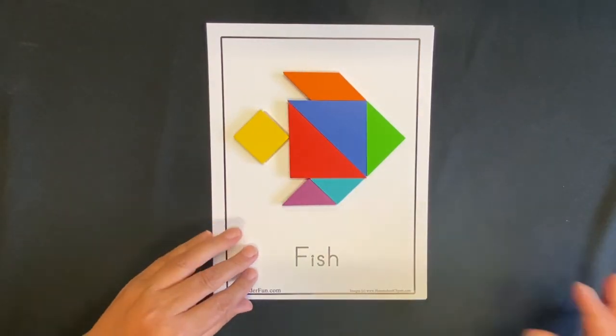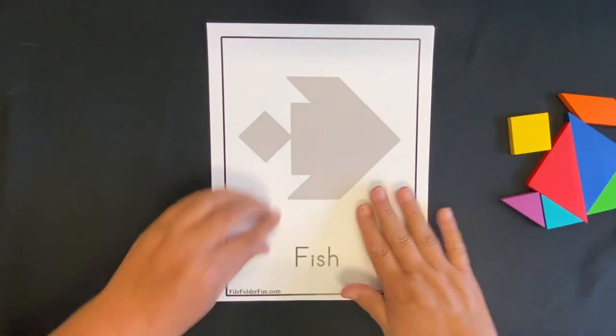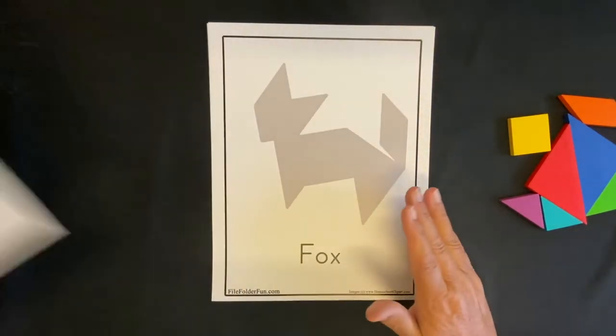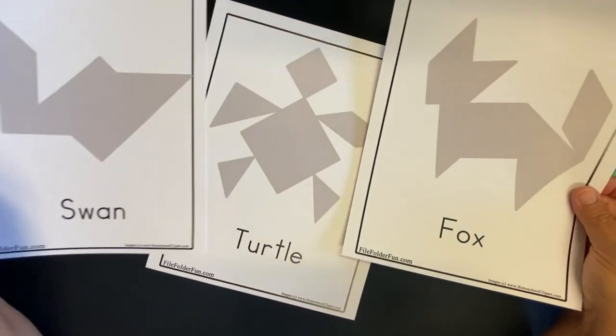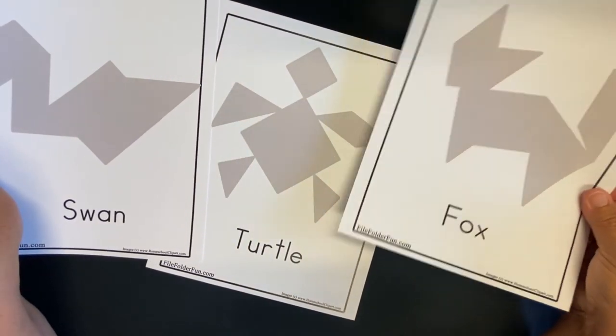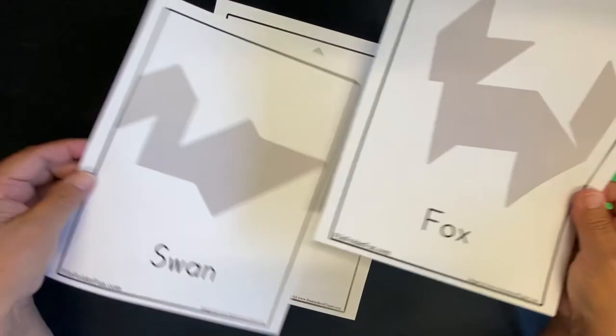Pretty cool. And then again, let's clean your board off. Let's see, let's do one more. Let me see - a fox, a swan, a turtle. Turtle's pretty easy. Let's do the fox.